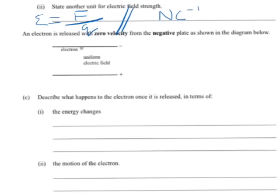I won't labor that one. An electron is released with zero velocity from the negative plate. So, Vi equals zero from the negative plate. It's an electron, so negatively charged means it's going to experience a force that way. And, as shown in the diagram. Describe what happens to the electron once it's released in terms of the energy changes.